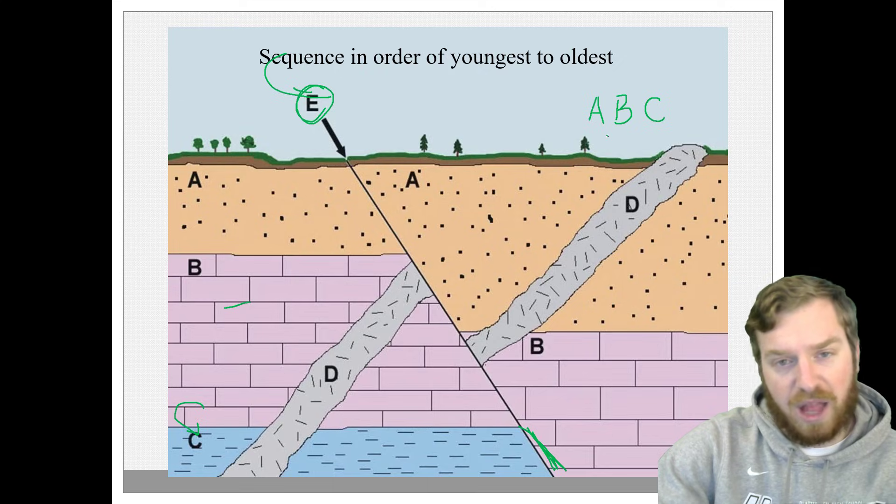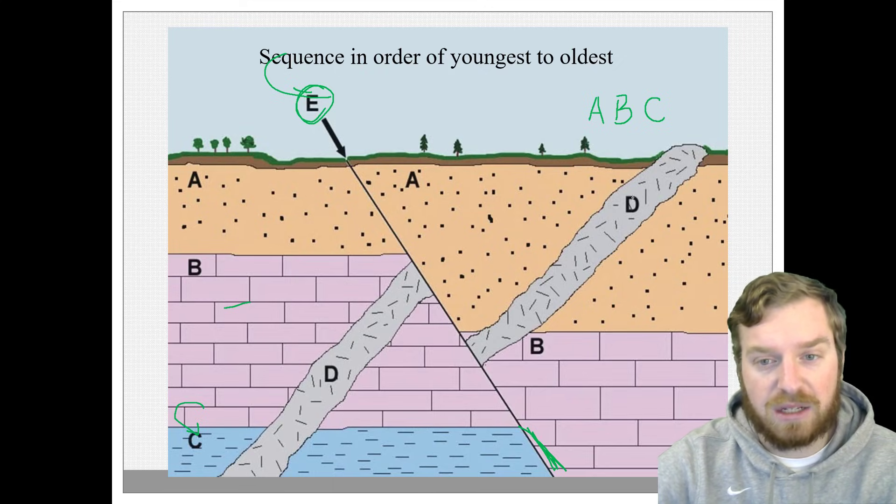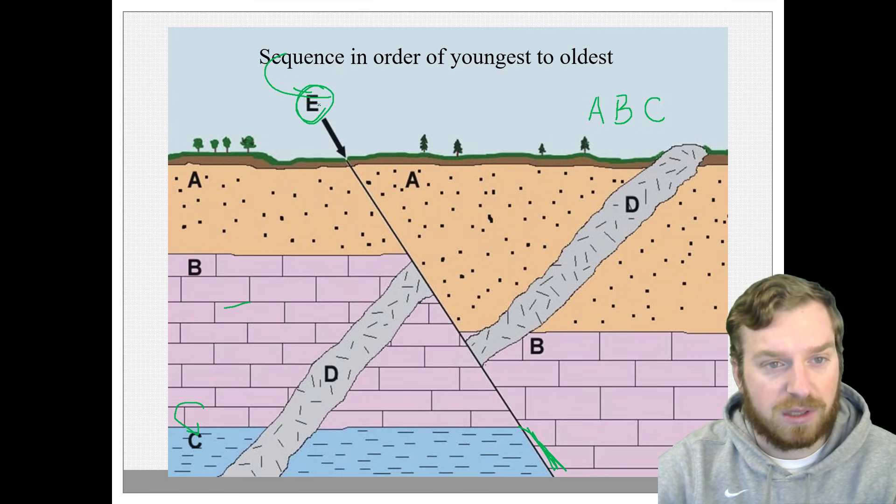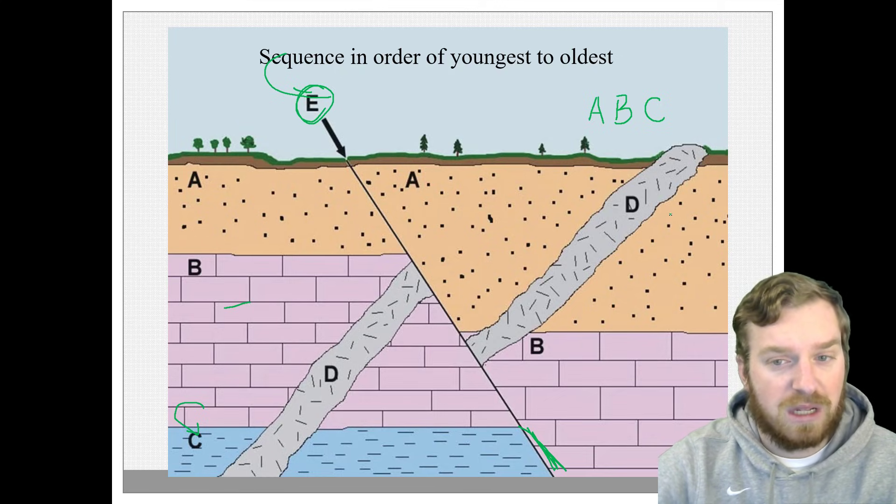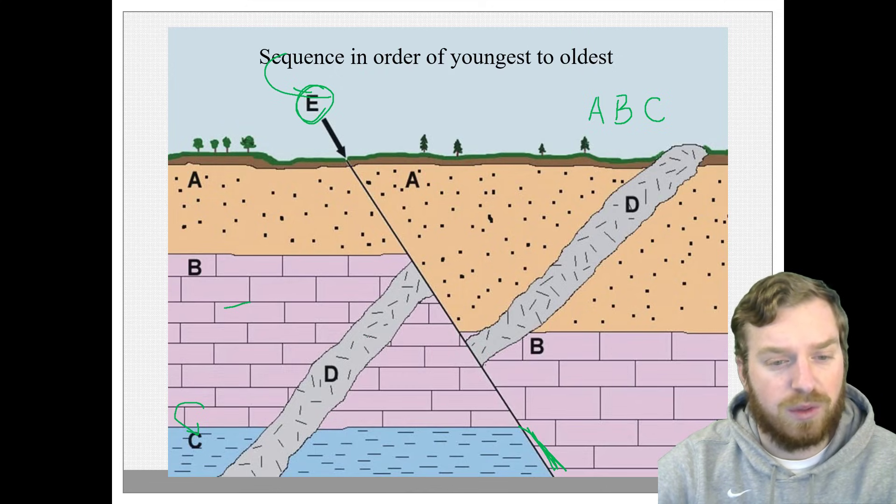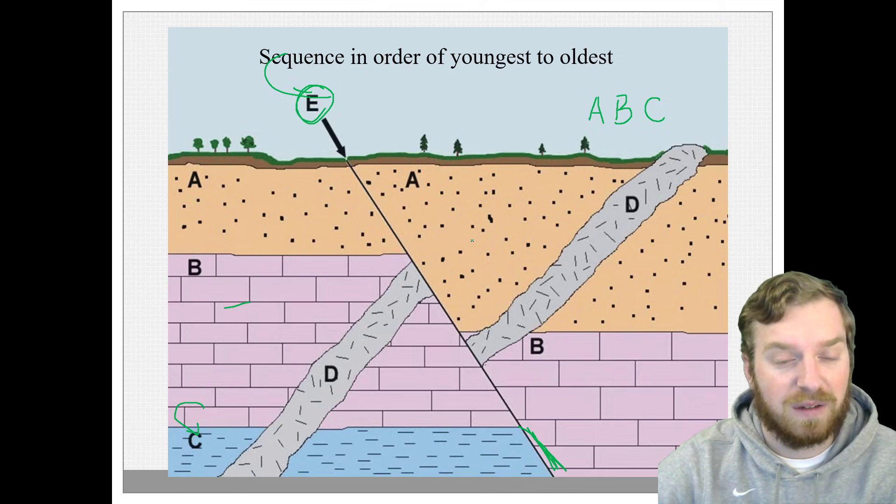And then after that, well let's look at intrusion D and fault line E. And I want to figure out which one of these two happened first. So notice that intrusion D is actually cut by the fault line. And if the intrusion D is cut by the fault line, then that means that the fault line had to happen after the intrusion was already made.